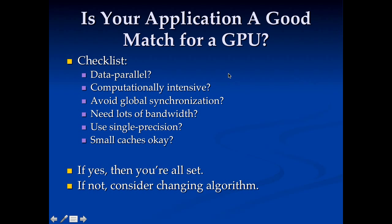The last thing is: is your application a good match for a GPU? If your application is data parallel, computationally intensive, doesn't need global synchronization, needs lots of bandwidth, is okay with single precision, and is okay with small caches — then it's a great match for a GPU. If any of these really don't apply, then you need to think carefully, and you want to consider changing your algorithm to choose one that fits better into this pattern.